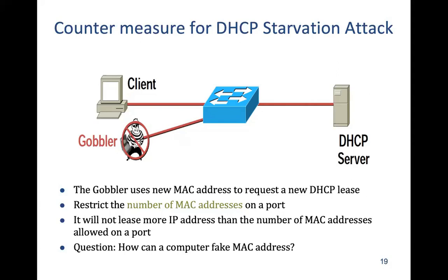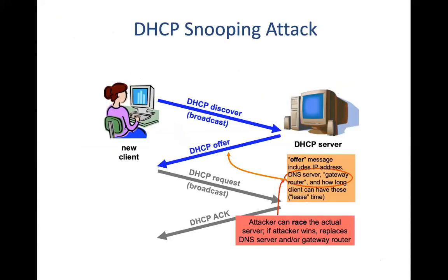Now let's look at the next attack. In the previous attack, the Gobbler was trying to take away all possible DHCP parameters from the server. Another possible attack is that the attacker — 2D — can act as a DHCP server himself. Of course, there will be legitimate DHCP servers in the network, so 2D has to be smarter and respond faster than the genuine DHCP servers. As soon as any client sends a DHCP Discover request, 2D immediately sends an offer.